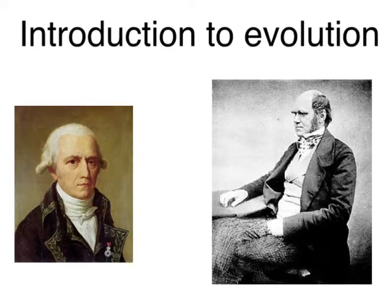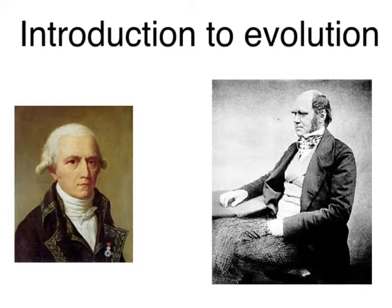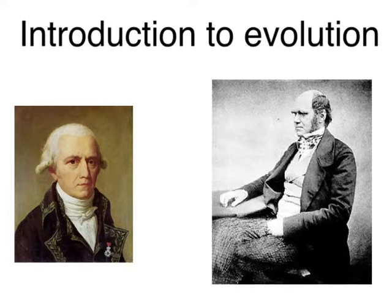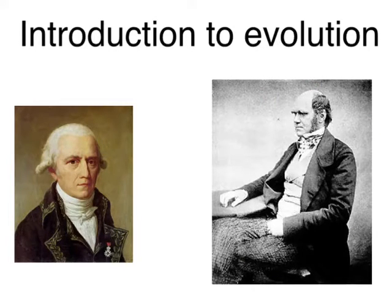First of all, I'm going to introduce you to these two gentlemen. This gentleman here is named Lamarck, and this gentleman over here you're probably more familiar with — his name is Charles Darwin. Lamarck was a French naturalist who lived around the same time as Darwin but a little bit before. His idea of evolution isn't correct, of course, but it was one of the first ideas that animals can change. Darwin then came up with his theory of natural selection, and Darwin obviously won that little battle between these two naturalists.